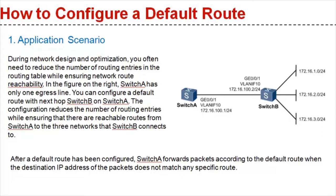After a default route has been configured, switch A forwards packets according to the default route when the destination IP address on the packets does not match any specific route.